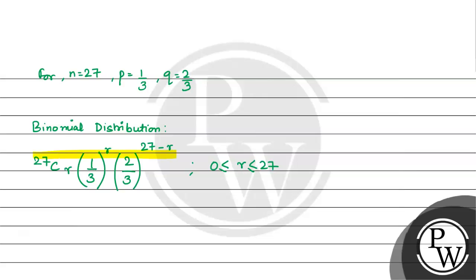The final answer is 27 c r multiplied by 1 by 3 to the power r multiplied by 2 by 3 to the power 27 minus r. I hope you understood that.